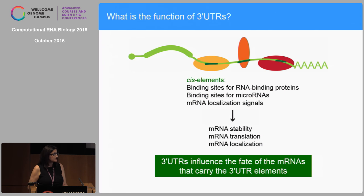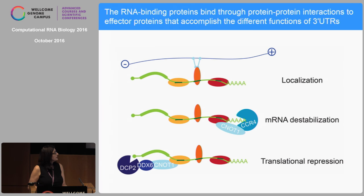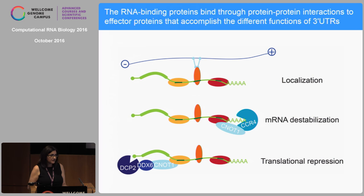What is the function of 3' UTRs? They have cis-regulatory elements that are bound by RNA-binding proteins, and it's well known that they regulate mRNA stability, translation, and localization. But it's not the RNA-binding protein itself that carries out the function — it's the protein interaction partners of the RNA-binding proteins. For example, an RNA-binding protein can interact with a motor protein leading to different mRNA localization, or it can recruit a deadenylase leading to mRNA destabilization, or it can recruit a decapping enzyme leading to translational repression.